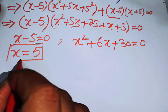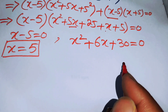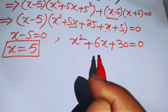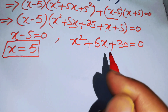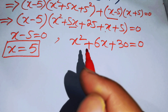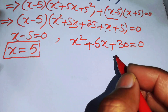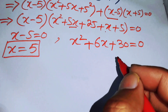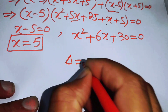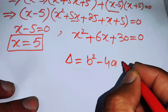To find the other roots, we solve the quadratic x squared plus 6x plus 30 equals 0. We are looking only for real roots of the given equation, so we check whether this quadratic has real or complex roots using the discriminant formula.